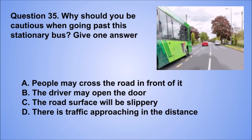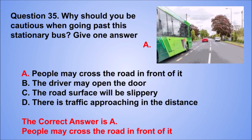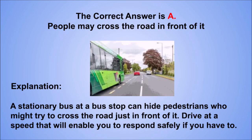Question 35. Why should you be cautious when going past this stationary bus? Give one answer. A. People may cross the road in front of it. B. The driver may open the door. C. The road surface will be slippery. D. There is traffic approaching in the distance. The correct answer is A, people may cross the road in front of it. A stationary bus at a bus stop can hide pedestrians who might try to cross the road just in front of it. Drive at a speed that will enable you to respond safely if you have to.